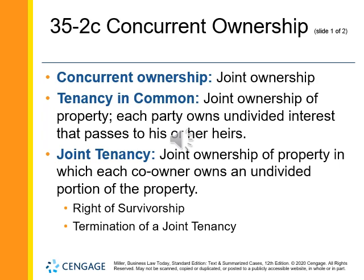A tenancy in common is joint ownership of the property where each owner has an undivided interest, meaning they're free to use the entirety of the property — not a prorated share, but every person with an ownership interest has an equal right to use all of the property. So if you have 12 tenants in common, each one of the 12 can use 100% of the property all the time. This can obviously cause problems. That interest also passes on to their heirs.